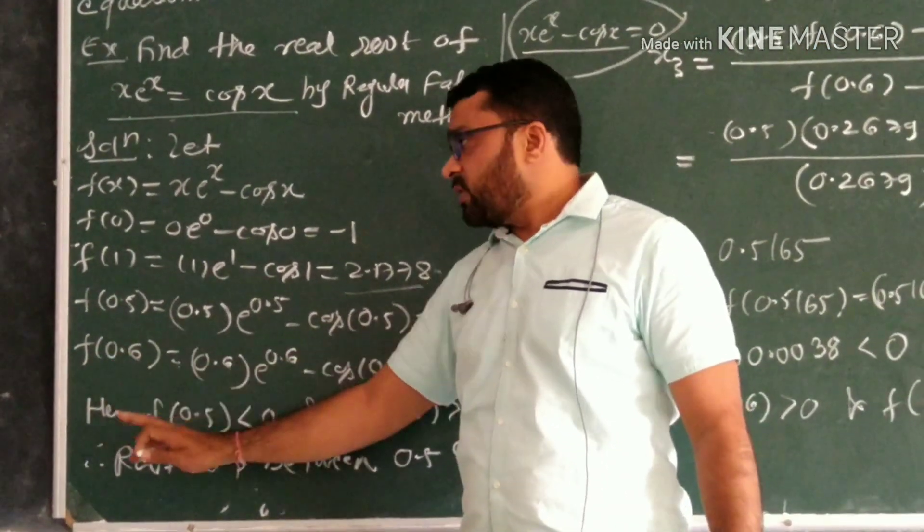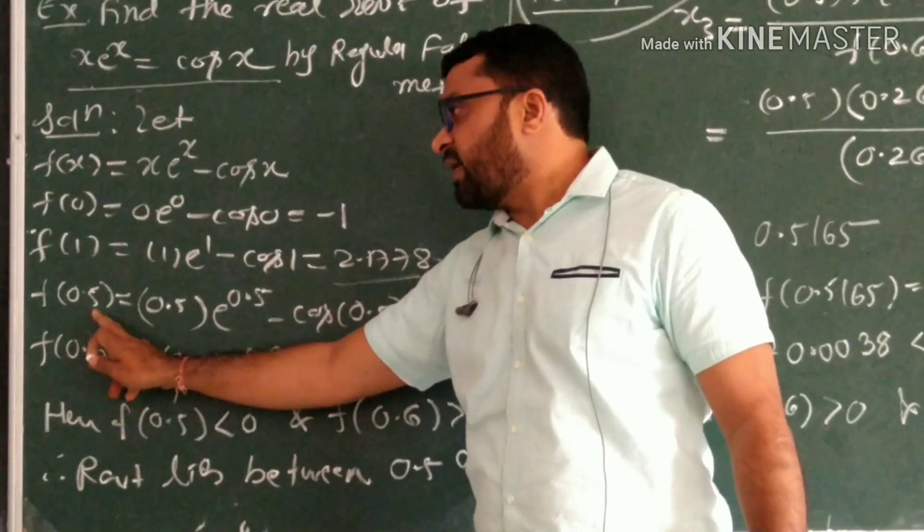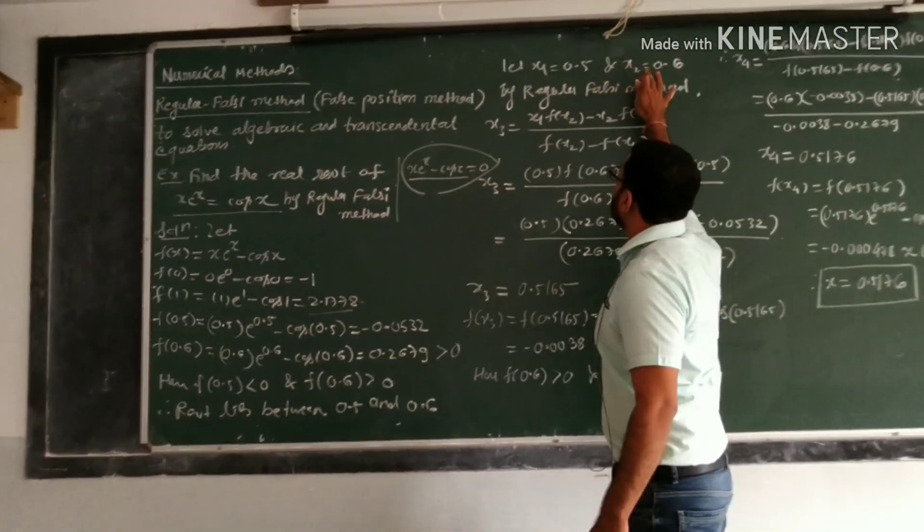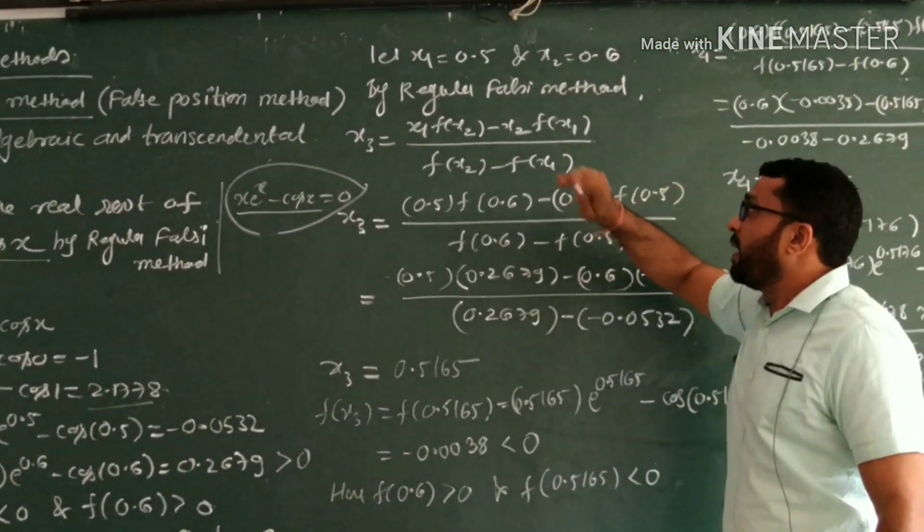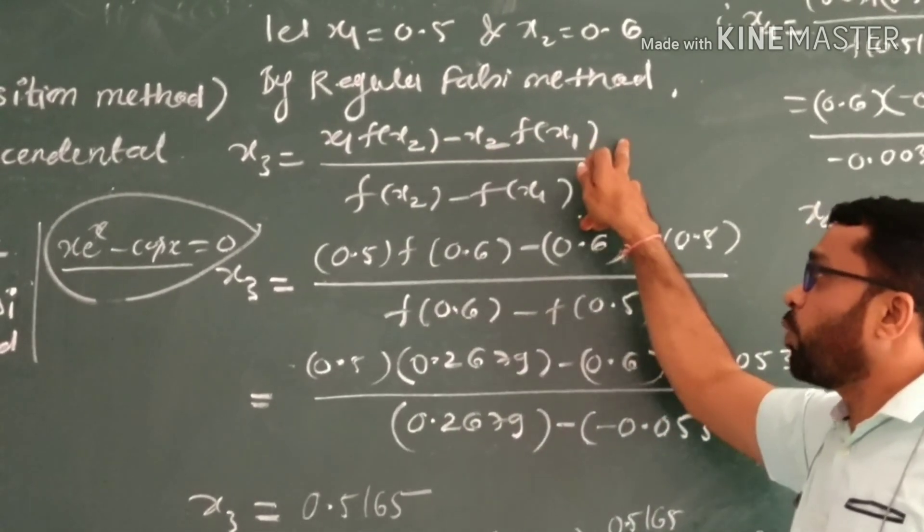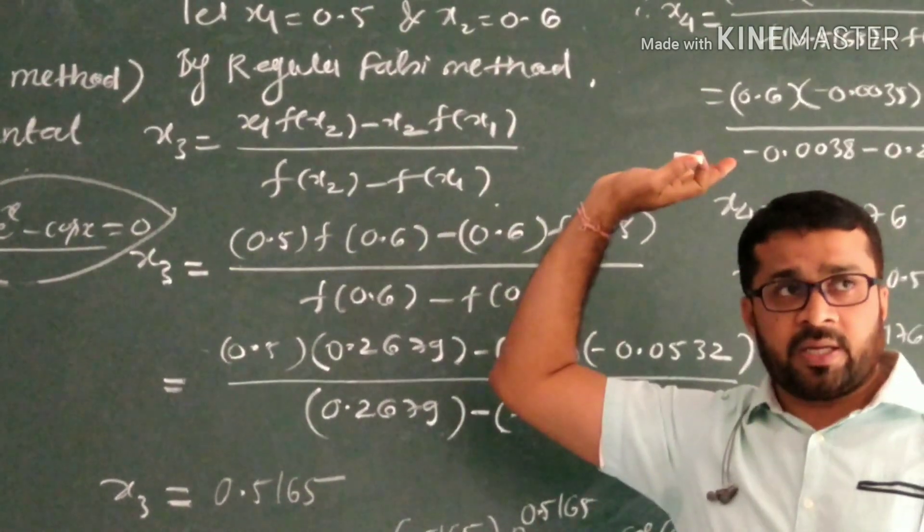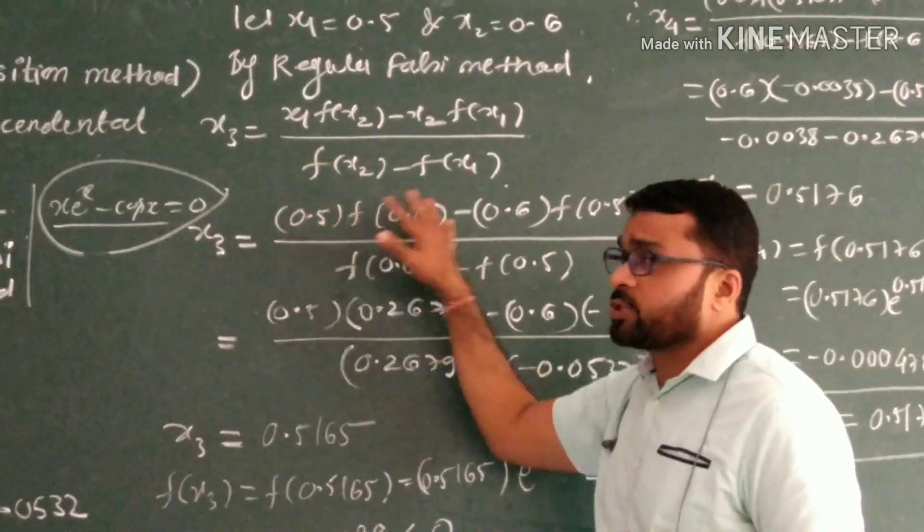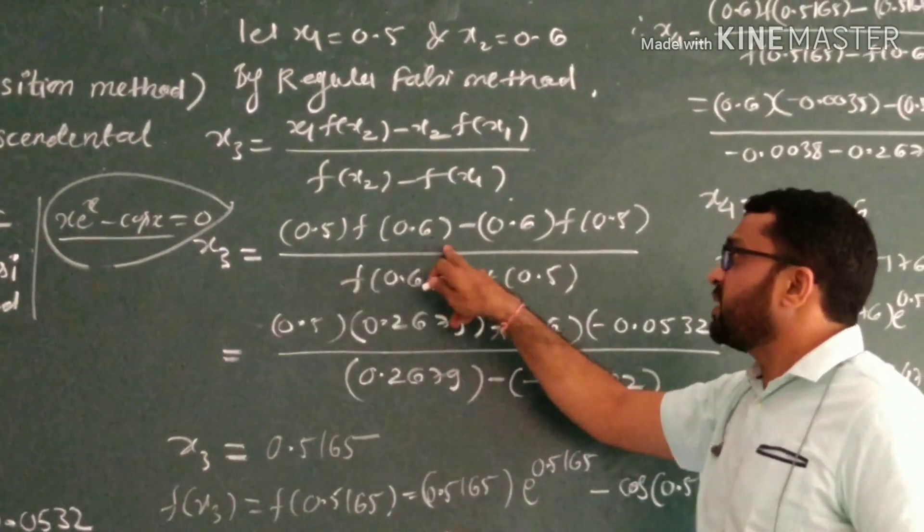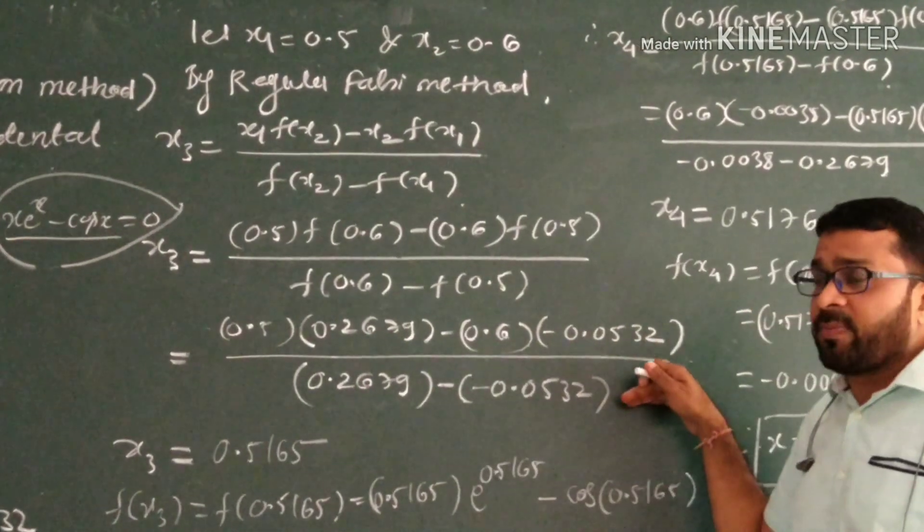This is x1, this is x2. I take x1 as 0.5 and x2 as 0.6. Now by Regula-Falsi method, x3 will be: x1·f(x2) - x2·f(x1) divided by f(x2) - f(x1). This formula is compulsory. Now I substitute the values, function values already calculated, put them here, just calculate using calculator.